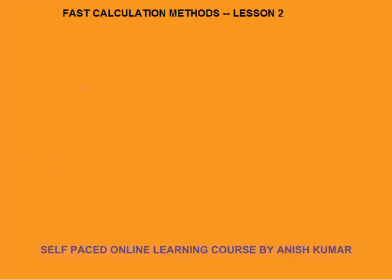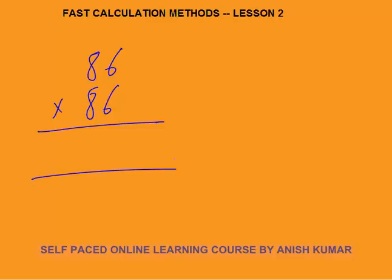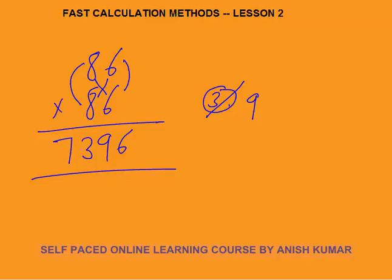This Vedic mathematics technique also works for squares — you don't need any extra formula. For example, 86²: Step 1 (U×U): 6×6 = 36 — write 6, carry 3. Step 2 (cross): 8×6 + 8×6 = 48 + 48 = 96; add carry 3 → 99 — write 9, carry 9. Step 3 (T×T): 8×8 = 64; add carry 9 → 73. Answer: 7396.